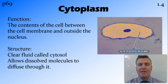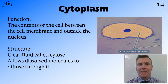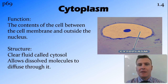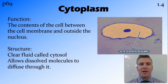Cytoplasm is all the contents of the cell between the nuclear membrane and the cell membrane. It's basically liquid, and it's called cytosol, and it allows dissolved molecules to move around in it, so sugars and things like that.